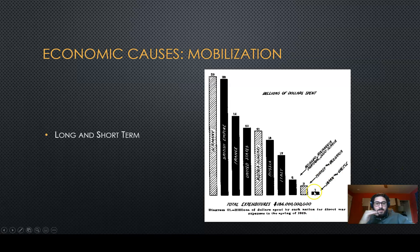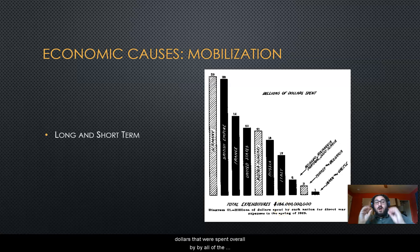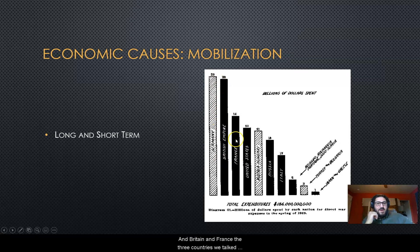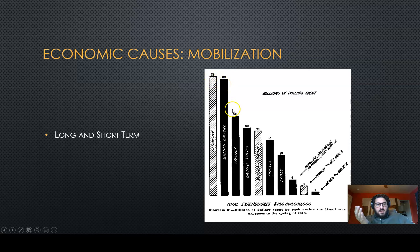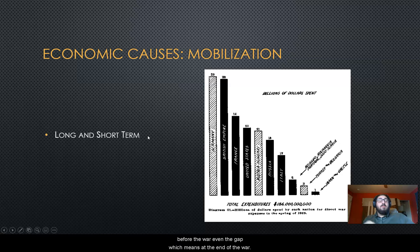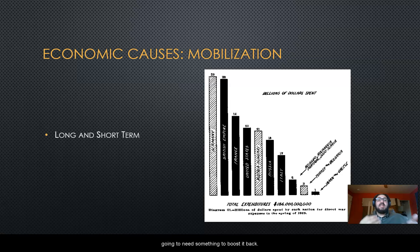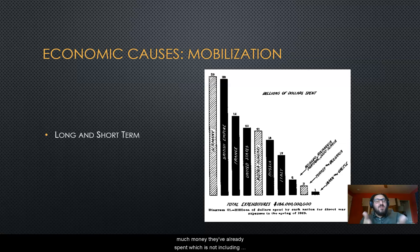Looking at this graph, the total spending comes out to roughly 186 trillion dollars in today's standards spent overall by all countries that fought in the war. Britain spent 39 billion, the French spent 26 billion. Economically, they've spent an ungodly amount of money before the war even began, which means at the end of the war their economies are going to be weakened and they'll need something to boost them back. Each of these countries are going to push hard to win because of how much money they already have on the line.